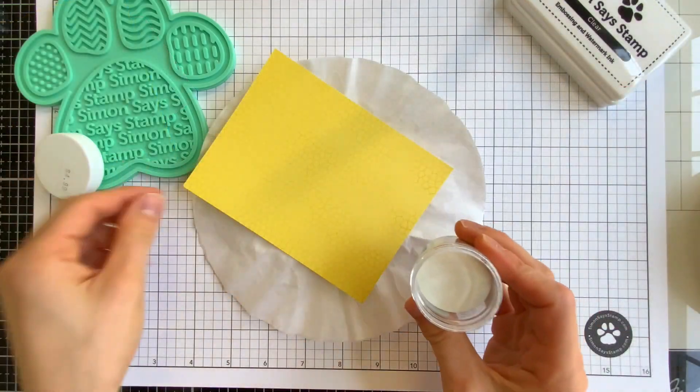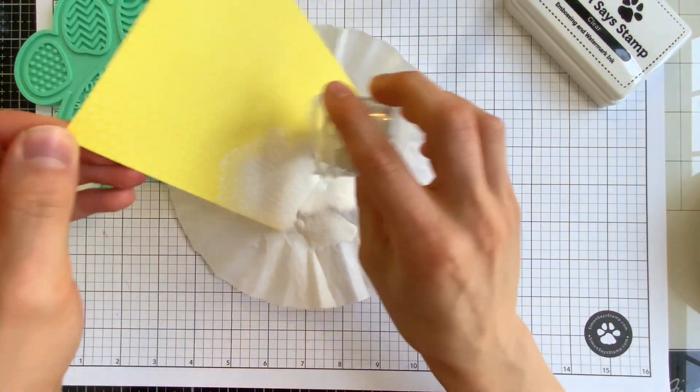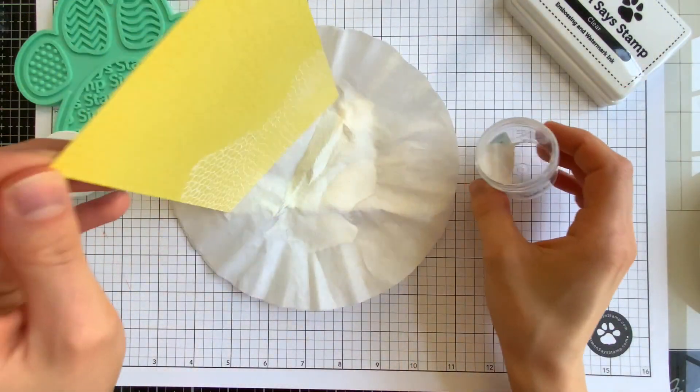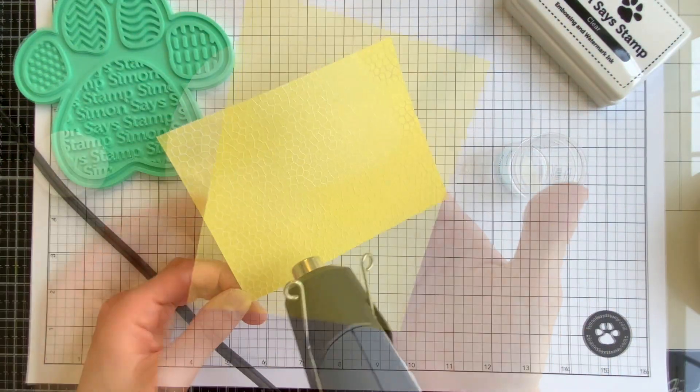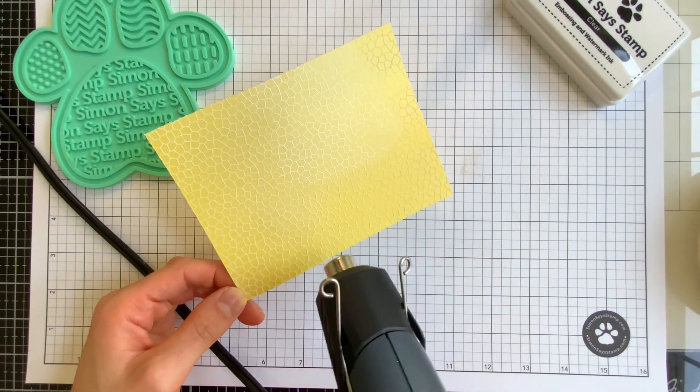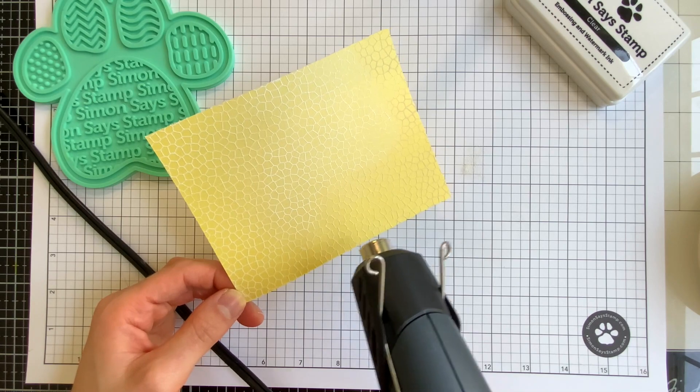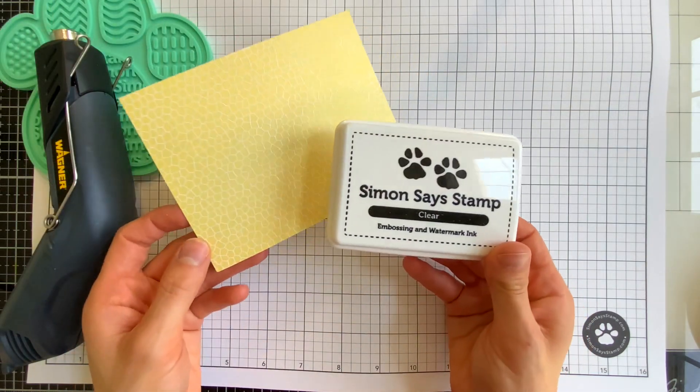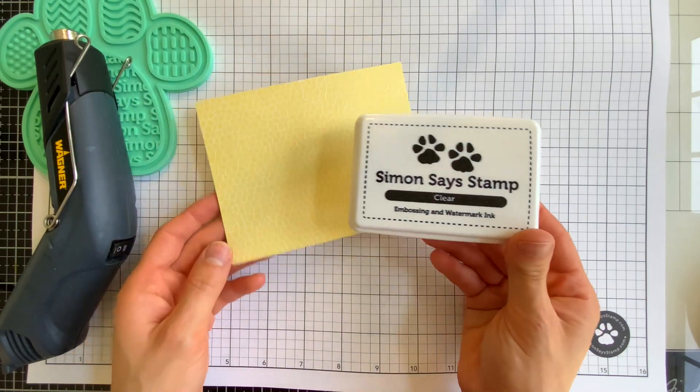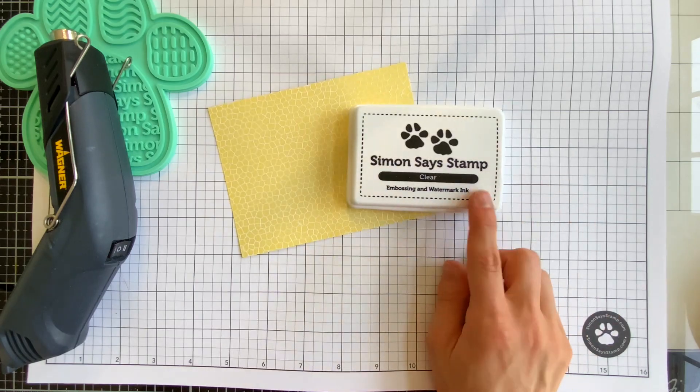Because this ink is acid-free, you also have the peace of mind of knowing that it's going to be safe to use on any project including scrapbook pages and photos. What makes our embossing ink so special is the fact that our ink pads are extremely moist and that means you won't have a dry pad for a very long time to come.